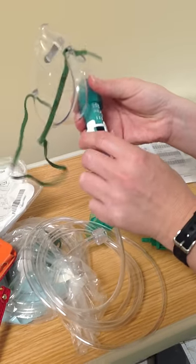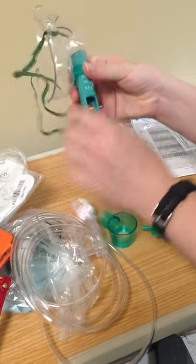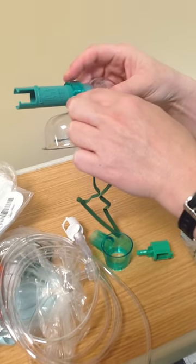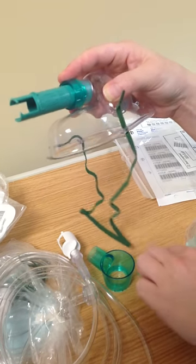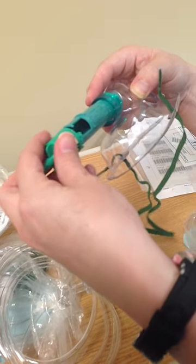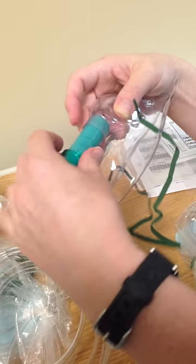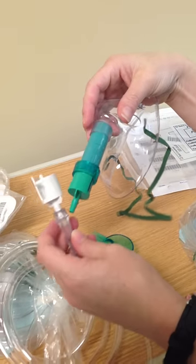And then if you need lower than that, the green on the other side is the lower percentage. 24%, 26%, which is the highest, is 6 liters. So if you wanted 30%, the green also has the arrow. You put it at 30%, which is 6 liters, and you put your oxygen on it.